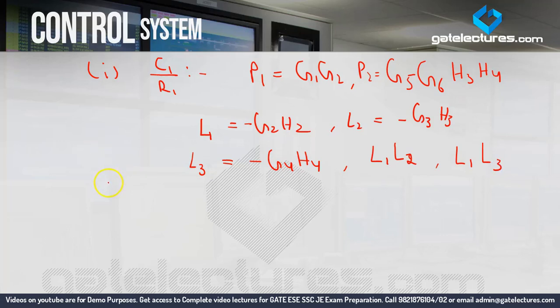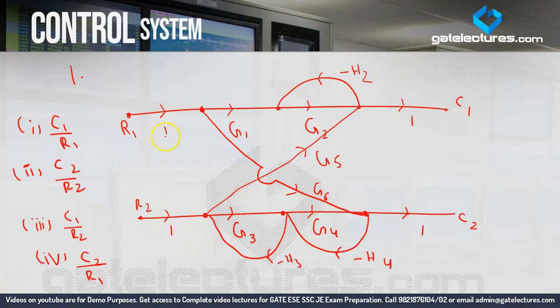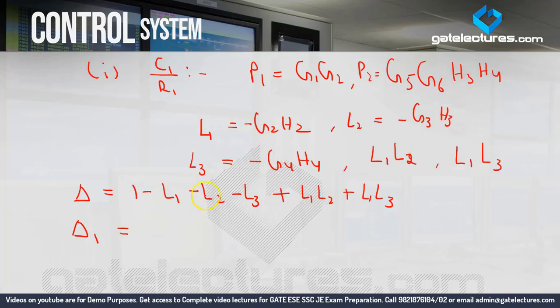The delta of the system is: 1 minus L1 minus L2 minus L3 plus L1 L2 plus L1 L3. Now for Del1 — it is the same as delta by excluding loop gains touching the first forward path. The first forward path from R1 to C1 is touched only by L1 (G2 H2). So L1 becomes zero, and Del1 = 1 minus L2 minus L3. Since L1 is zero, the non-touching terms also vanish.